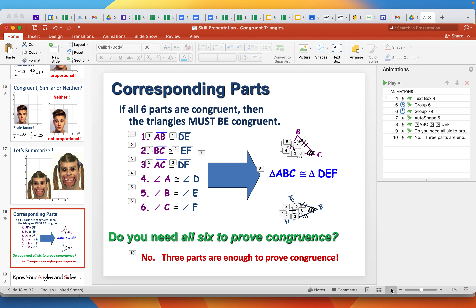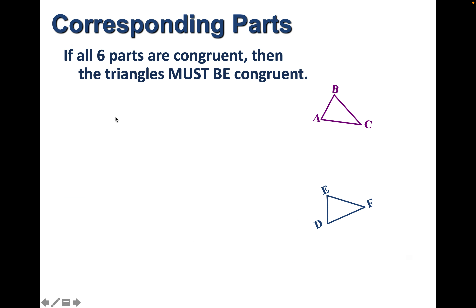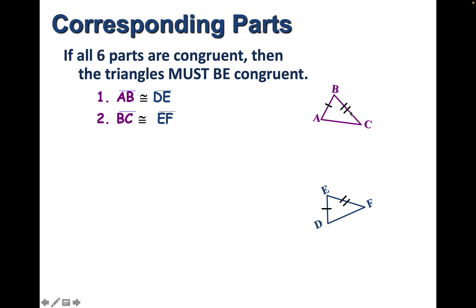Now we have what are called corresponding parts. If we have two triangles and all six parts are congruent, then the triangles must be congruent. Corresponding parts mean matching parts. For example, AB is congruent to DE — we mark them on the diagram with a little line to show those are congruent. BC is congruent to EF, and AC is congruent to DF. So we've shown all sides here are congruent to all sides of the other triangle.